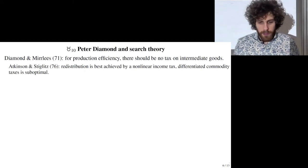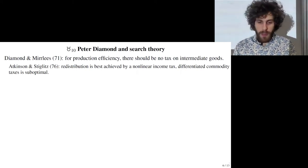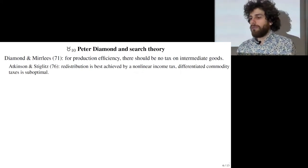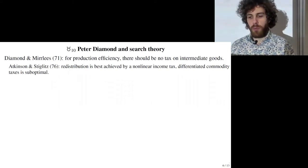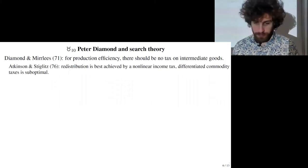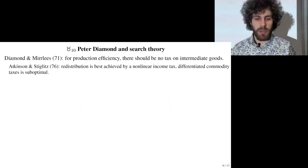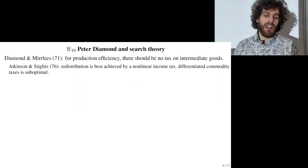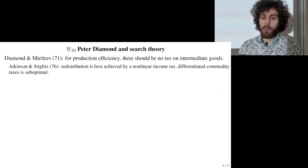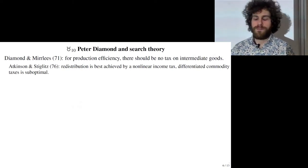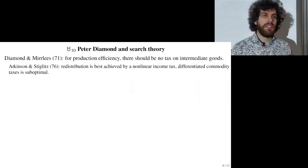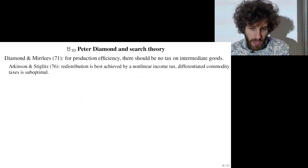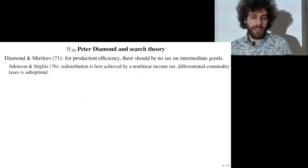This slide is about Nobel Prize winner Peter Diamond, a public economist. Public economics is the study of what the government should do, and a large part concerns taxation — which will be covered next week — and labor economics, specifically unemployment. Peter Diamond was a precursor of the most commonly accepted mainstream view of the labor market and unemployment among economists.